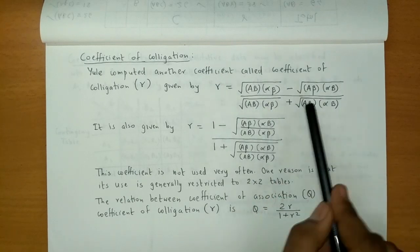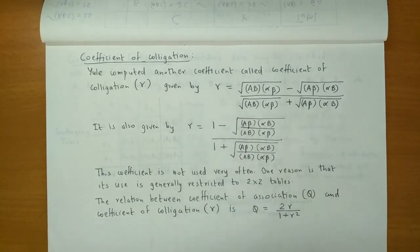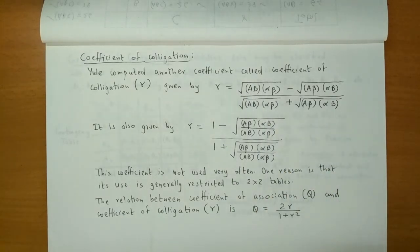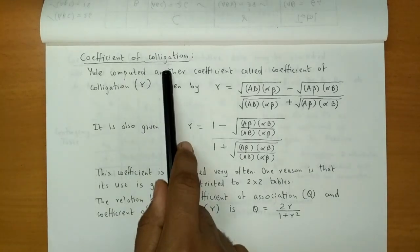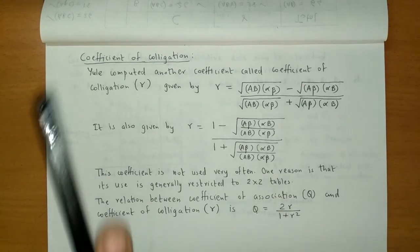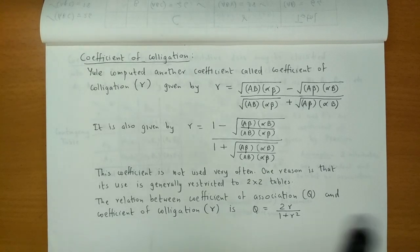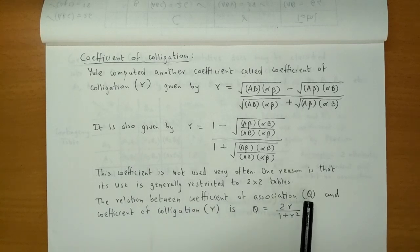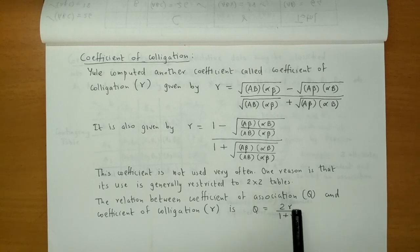The easiest way is to take the Coefficient of Association and take its square root, and you get the Coefficient of Colligation. There are some restrictions — this coefficient is not used very often because calculating the square root is difficult. The Coefficient of Association does not require a square root, so it is more widely used. The Coefficient of Colligation applies to 2×2 tables, meaning binary variables only.